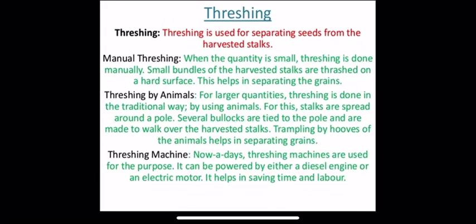The second method is threshing. Threshing is used for separating seeds from the harvested stalks. When stalks are harvested and we have to obtain grain from the stalks, we use this method. There are three types of threshing. The first is manual threshing. When the quantity is small, threshing is done manually — small bundles of the harvested stalks are threshed on a hard surface, which helps in separating the grains.